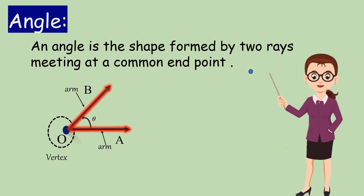An angle is denoted by the symbol angle. It is read as Angle AOB or Angle BOA.